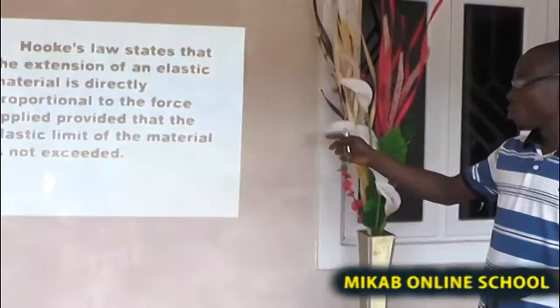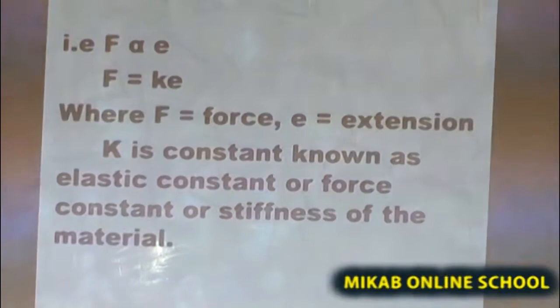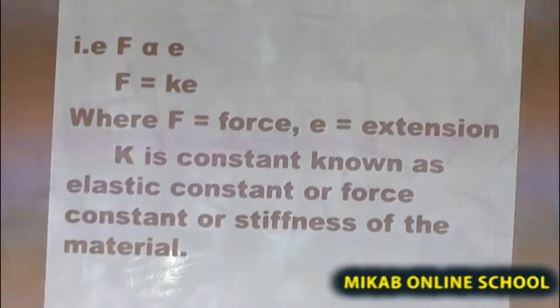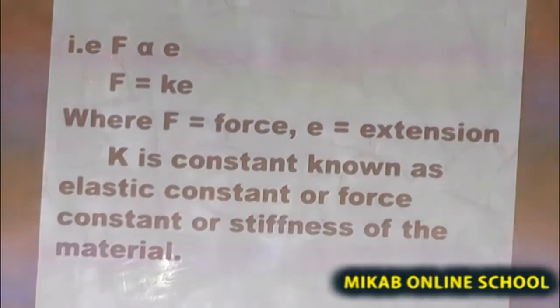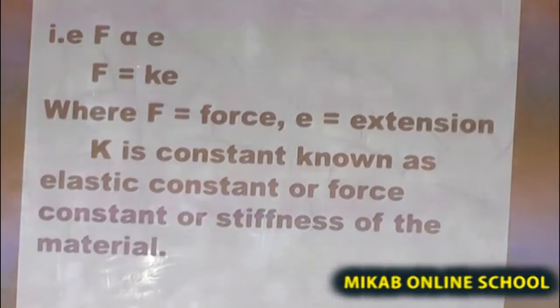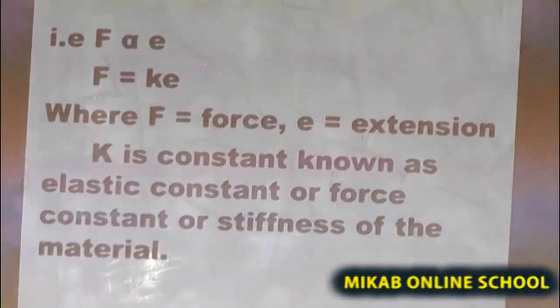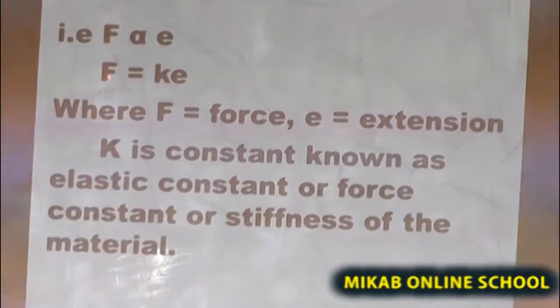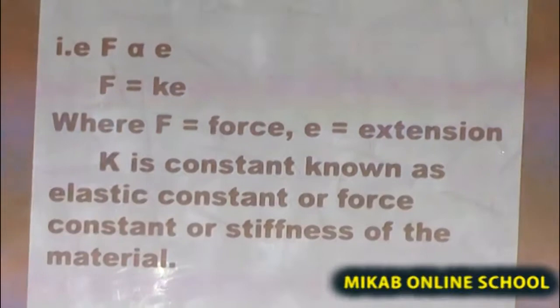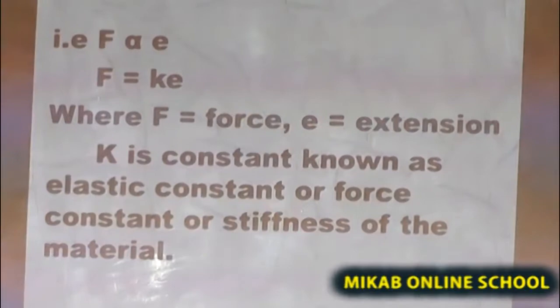From the law stated above, you will see the expression: F, which stands for force, and E, which stands for extension. The sign in between F and E is what we call the sign of proportionality, which shows that force is directly proportional to extension. If you want to change this sign of proportionality to equality, you must introduce a constant, which is K. From there you have F equal to KE, where F equals force, E equals extension, and K is a constant known as the elastic constant — you can also call it force constant or stiffness of the material.